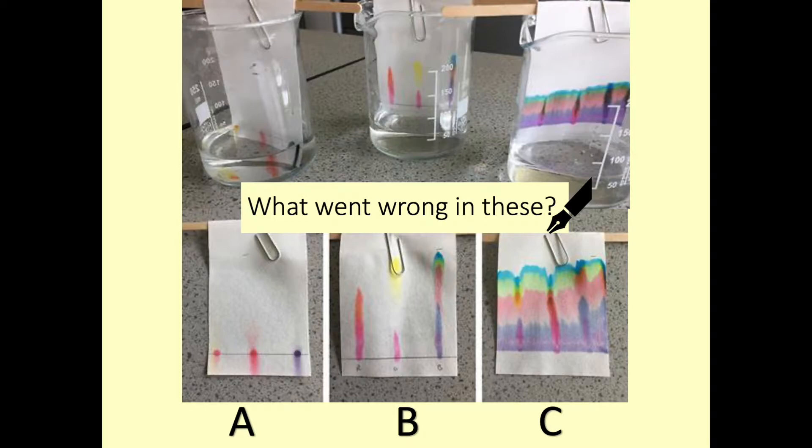Okay, so with A, looking at beaker A, we can see that our water level is up here, whereas our substances were put on a line down here. So what's happened here is our substance has dissolved into the water and so the water hasn't carried it up the paper, because our substance has ended up being dissolved into the water that's in the beaker. So the error here is that our solvent level was too high.